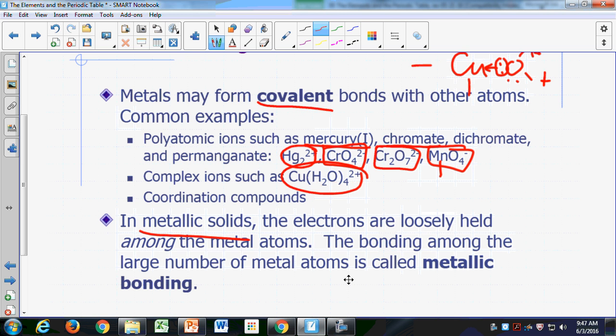You could imagine just the nuclei of the atoms, if they're all metals, you can imagine them as just buried in a sea of electrons. So you have the bonding among a large number of metal atoms, a whole bunch of metal atoms right next to each other, electrons floating around them more or less freely.